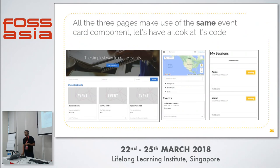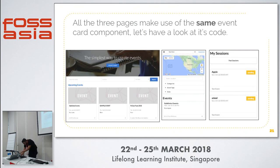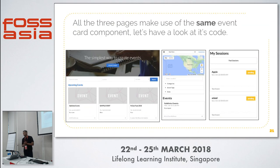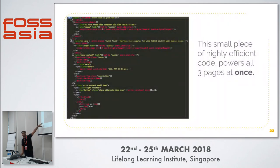Because Ember uses components, there is potential for extreme code reusability. The event cards on the landing page, the explore route, and the sessions route all use three different variations of the same component — only what is passed into the component changes, along with some if-else logic. The codebase size has been reduced exponentially compared to the previous implementation. All three pages share the same code; I only change what I pass in the model and it adjusts accordingly.